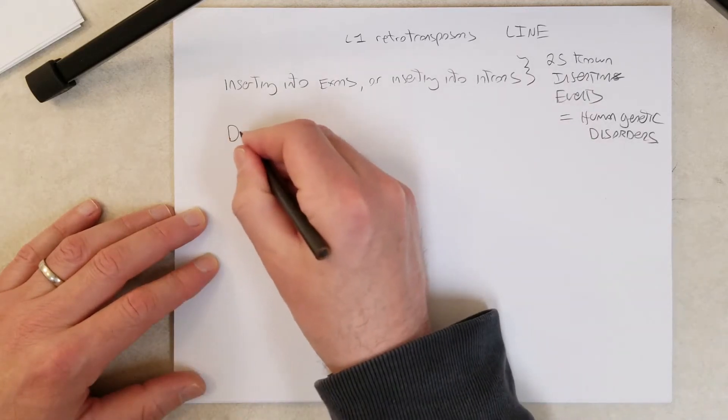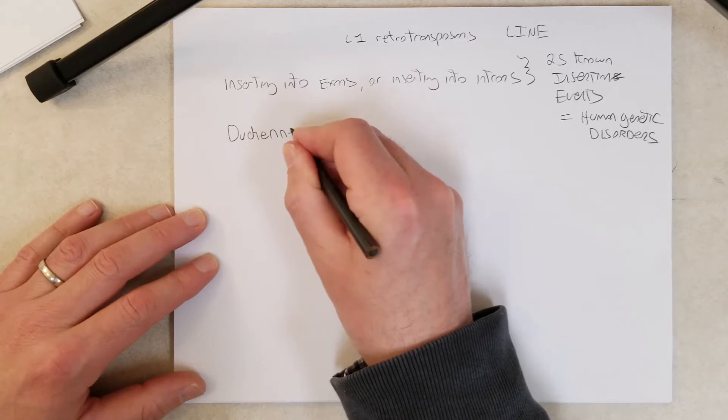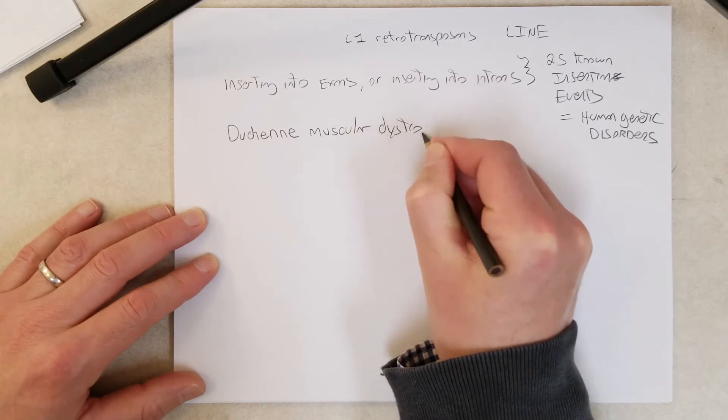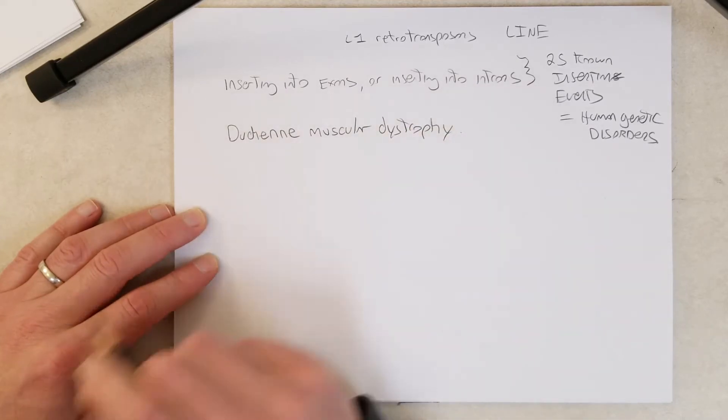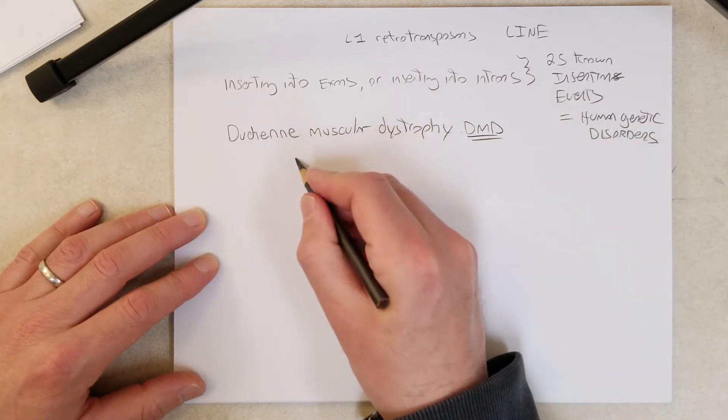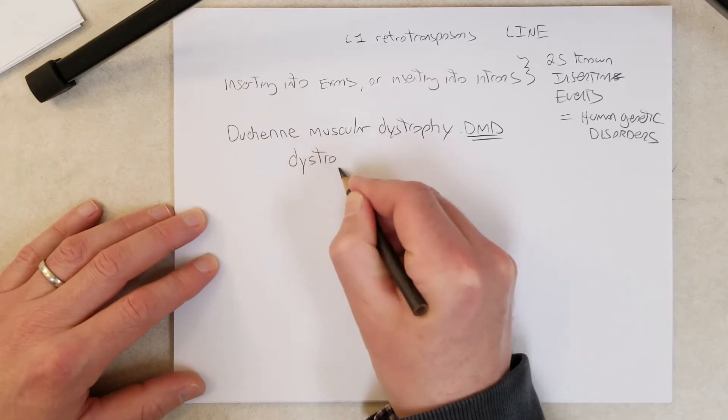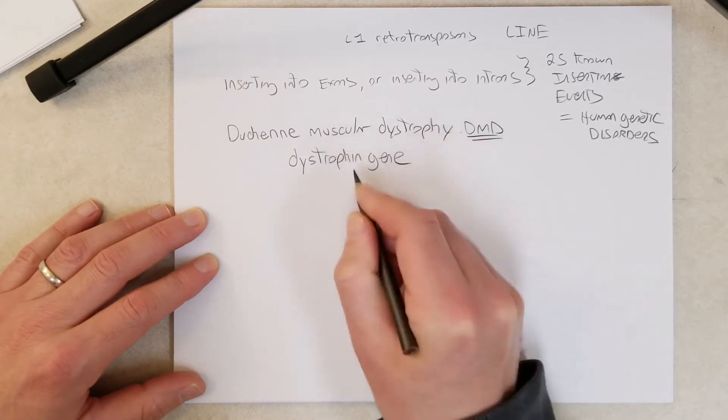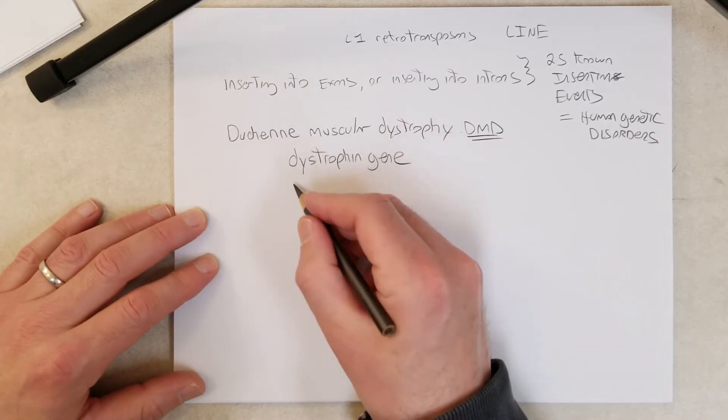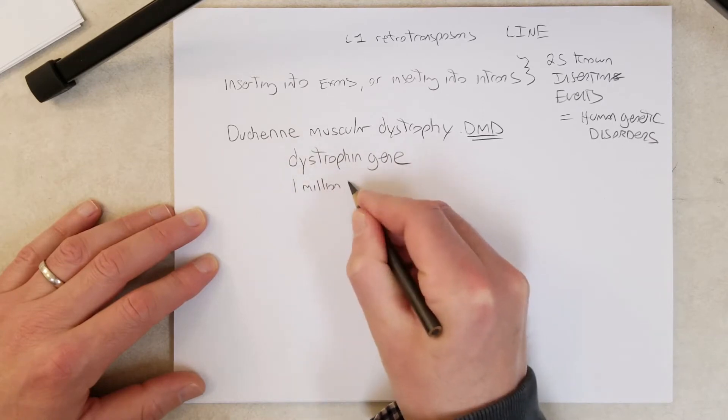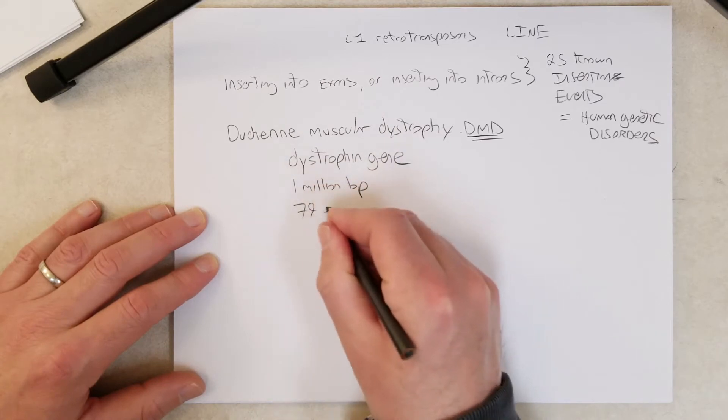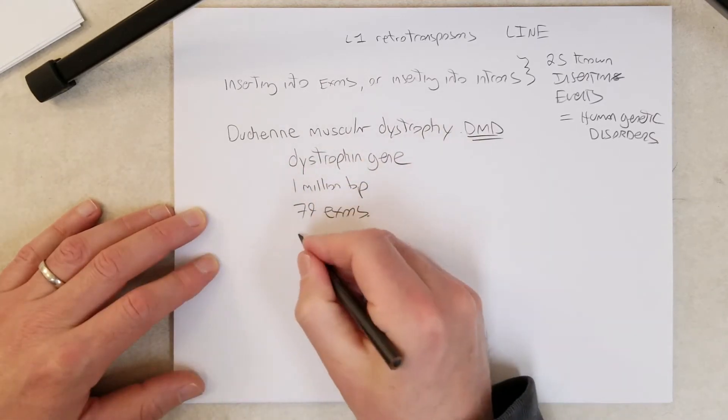In these cases, it was insertion into an exon or insertion into an intron of a protein-coding gene. We're going to take a look at one of these. There's a genetic disorder called Duchenne muscular dystrophy. This is caused by mutations in the dystrophin gene. The dystrophin gene is a large gene, it's about 1 million base pairs long. There are, I think, 79 exons, and it's found on the X chromosome.